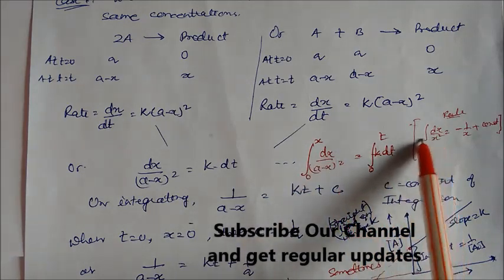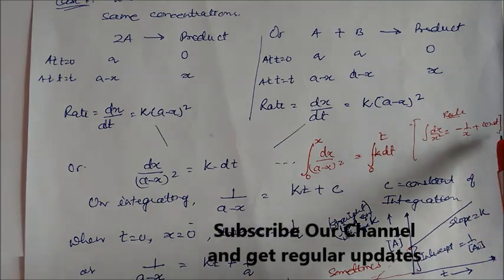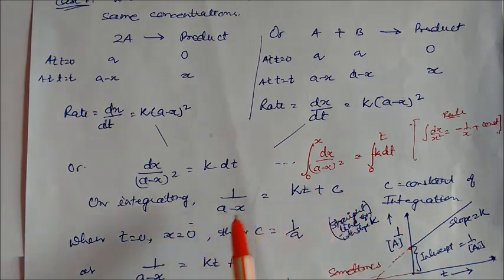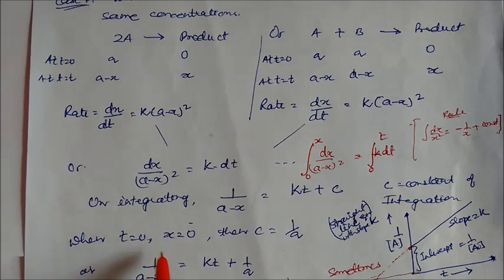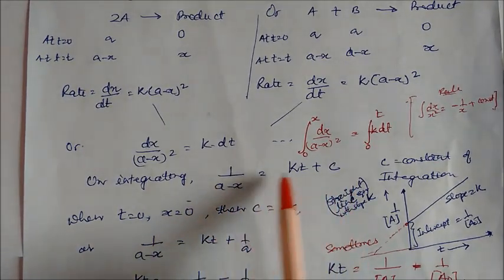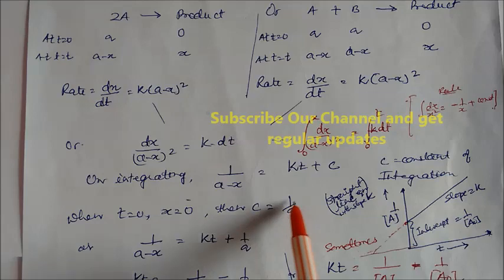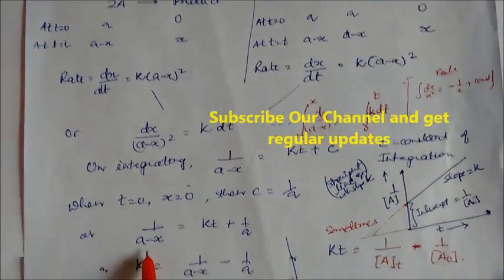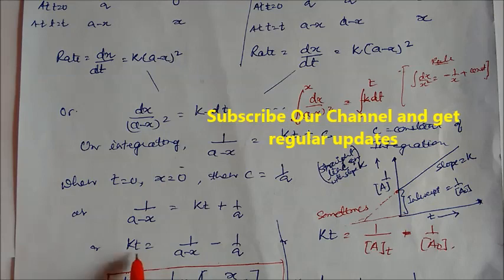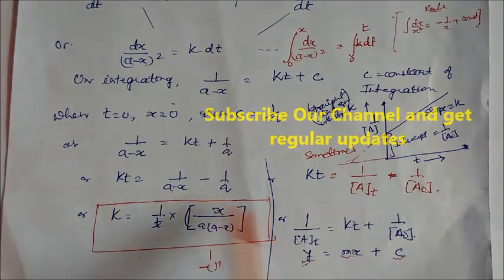Using the integration rule, integrating dx/(A−x)² gives 1/(A−x) equals Kt plus C. Applying initial conditions t=0 and x=0, we get C equals 1/A. Substituting, Kt equals 1/(A−x) minus 1/A. Therefore K equals (1/t) × x divided by [A(A−x)]. This is the equation for the rate constant.